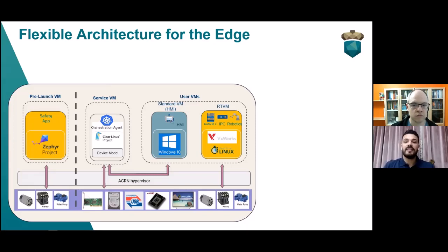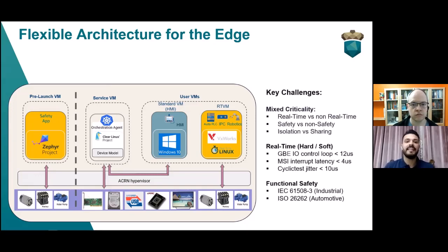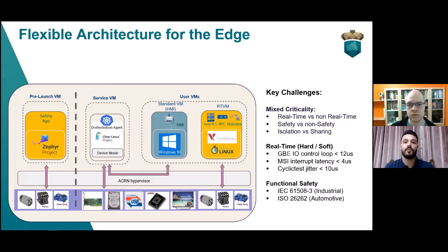The goal of ACRN is to address the gap between data center hypervisors and hard partitioning hypervisors. It tackles key challenges on the edge: workloads with mixed criticality, real-time versus non-real-time workloads, safety and non-safety applications. Some applications have hard real-time requirements, others have soft real-time requirements. ACRN also focuses on functional safety and certifying hypervisor components for automotive or industrial use.